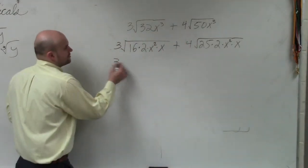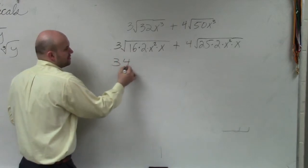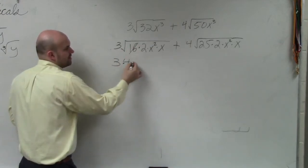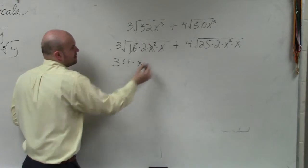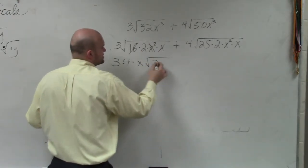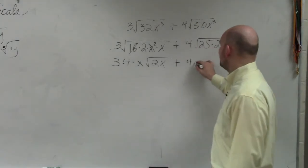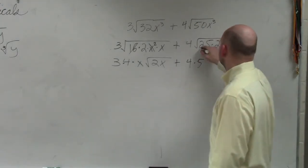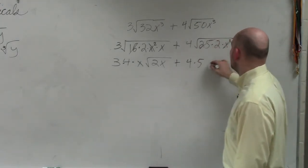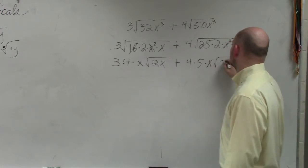Well, the square root of 16 is 4, the square root of x squared is x, so under the radical I'm just left with 2x. Plus, the square root of 25 is 5, the square root of x squared is x times 2x.